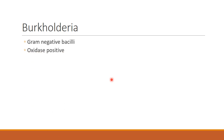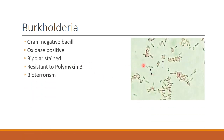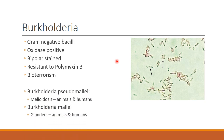Now Burkholderia. Burkholderia is a gram-negative bacillus and oxidase positive, like Pseudomonas. To differentiate Burkholderia from Pseudomonas, look for bipolar stained gram-negative bacilli, also called a safety-pin-like appearance. It is resistant to polymyxin B, and can be used as a potential agent of bioterrorism. Two major species: Burkholderia pseudomallei can cause melioidosis, and Burkholderia mallei can cause glanders, which is present in horses and involves nasal discharge and ulcer in the nasal septum.